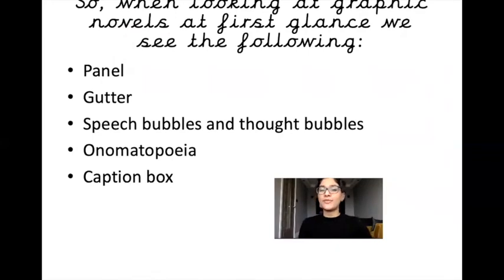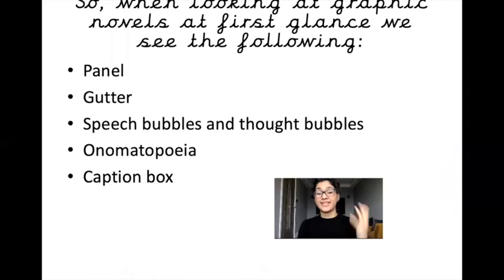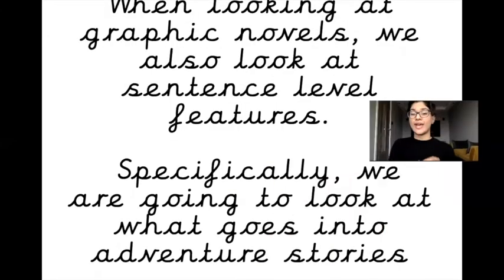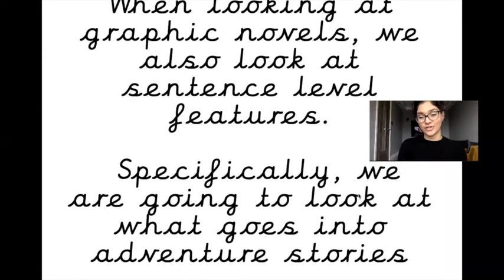When looking at graphic novels, at first glance we see the following: panel, gutter, speech bubbles and thought bubbles, onomatopoeia, and a caption box. We also look at sentence-level features — what's included in the sentences themselves. Now specifically, we are going to look at what goes into adventure stories.